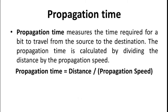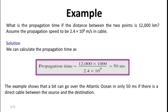Propagation time measures the time required for a bit to travel from source to destination. The propagation time is calculated by dividing the distance by the propagation speed. For example, what is the propagation time if the distance between two points is 12,000 km? Assume the propagation speed to be 2.4 × 10⁸ meters per second in cable.